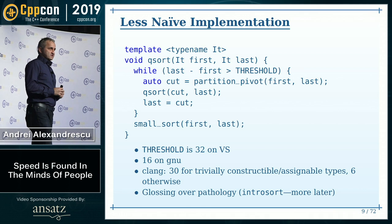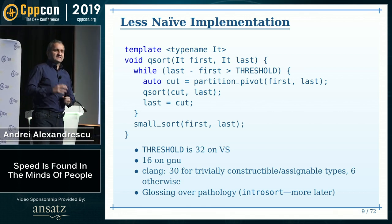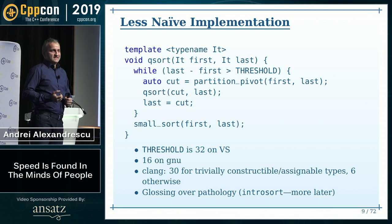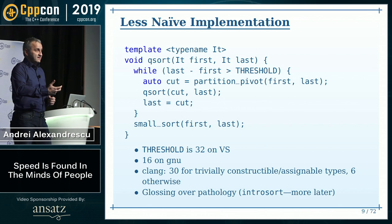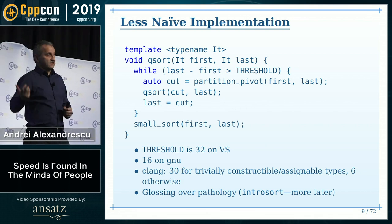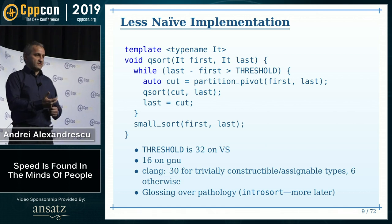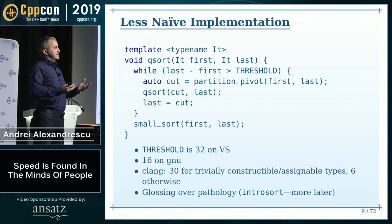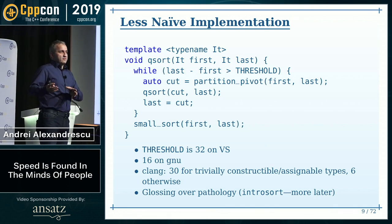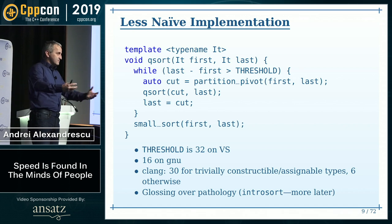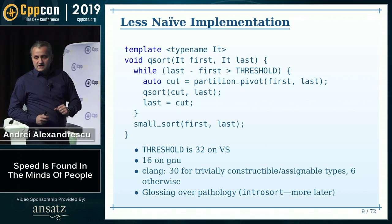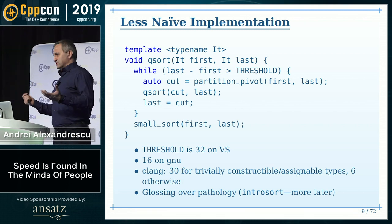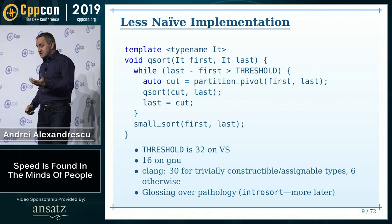Clang makes an interesting choice: it tunes the threshold depending on characteristics of the input. If the type you're sorting is trivially movable and assignable, it uses a larger threshold; otherwise a smaller one. This is called a meta-parameter — a parameter to the algorithm not passed by the user but chosen in a hidden way. Clang chooses the threshold meta-parameter depending on relatively obscure characteristics of the input.